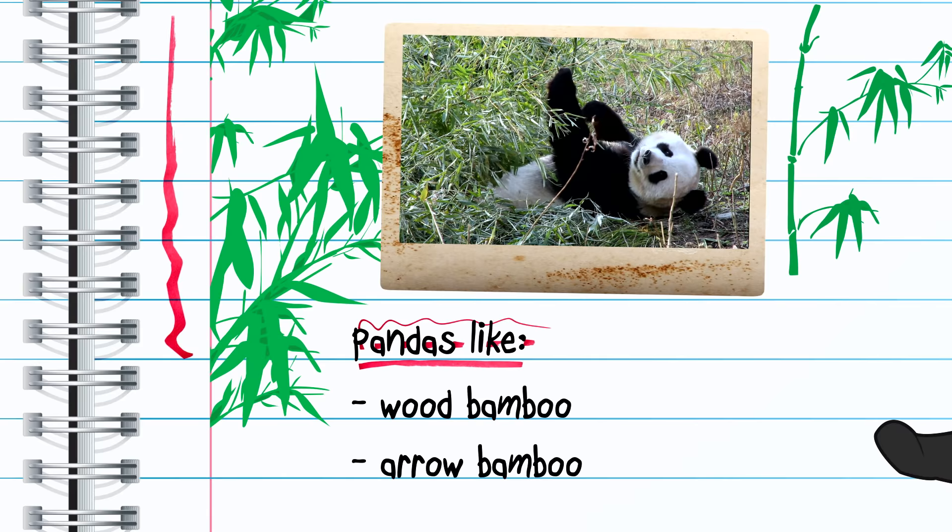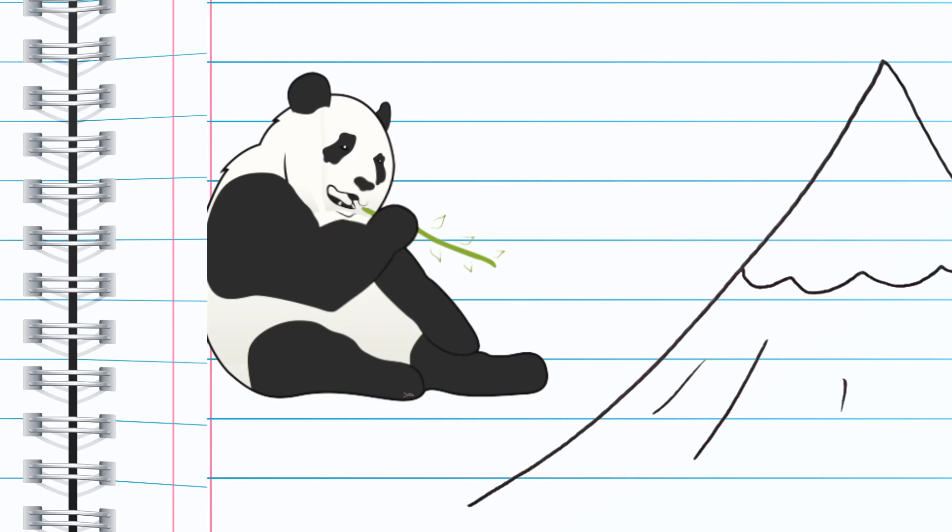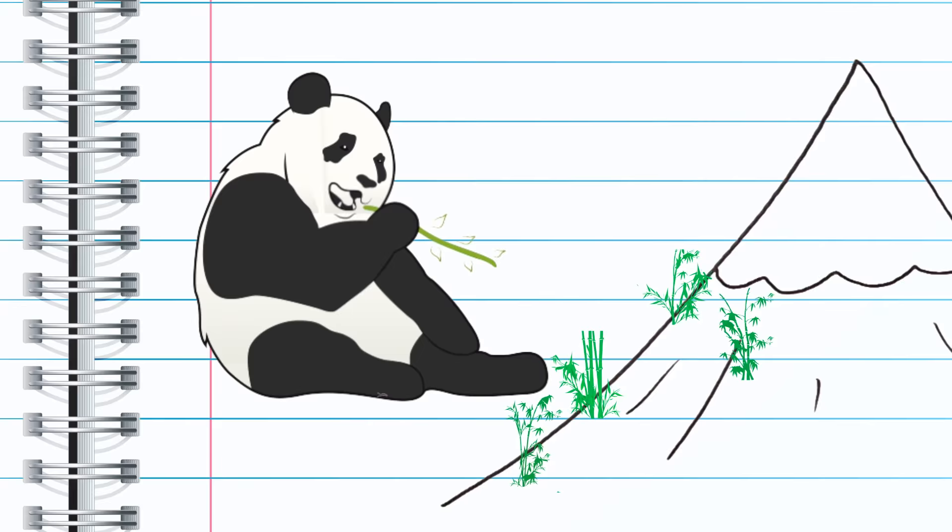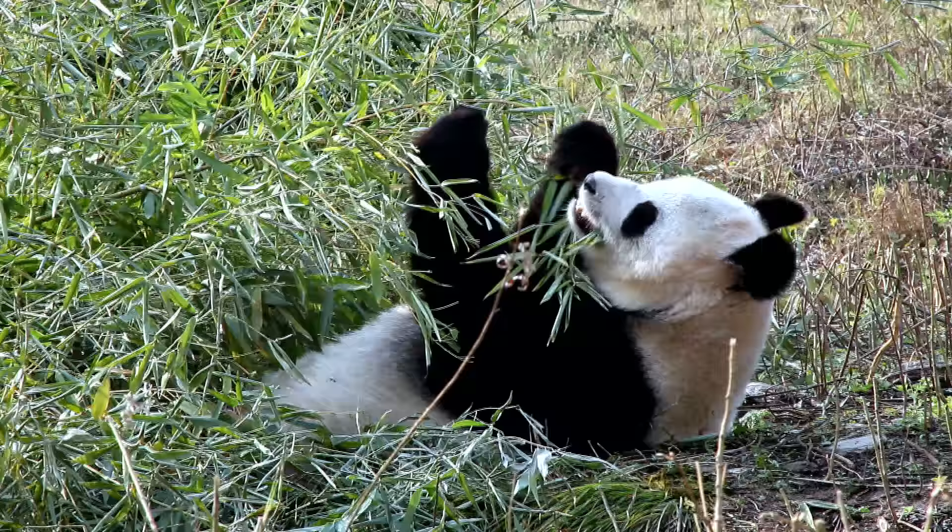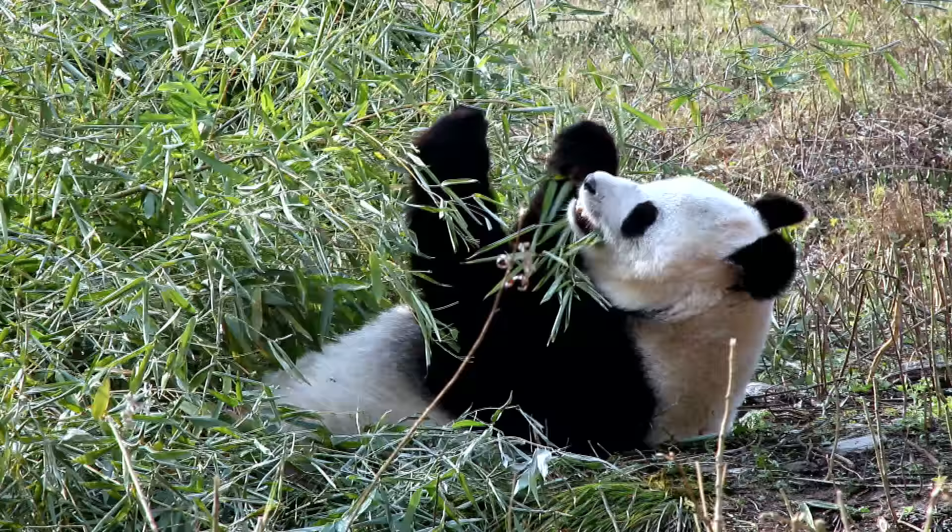Second of all, pandas have only found two types of bamboo that has the right nutrients, wood bamboo and arrow bamboo. But the thing is, they sprout at different times of the year and at different elevations in their mountainous terrain. In early spring during mating season, they eat young bamboo shoots and have to migrate as new bamboo sprouts at higher elevations.